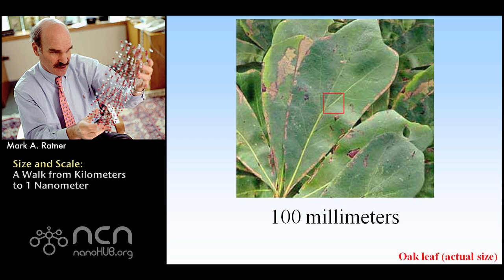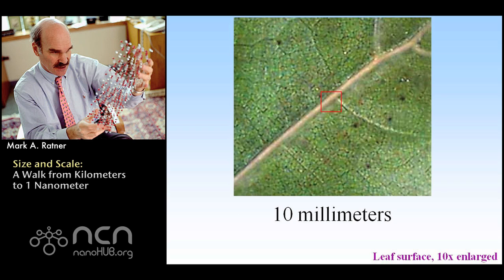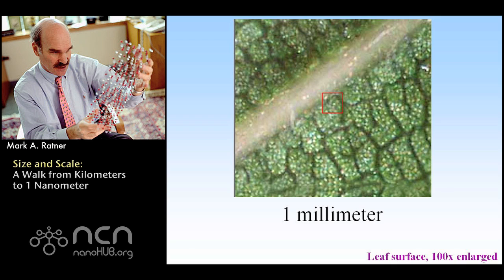This is the first actual-size picture. We started with a very large view of southern Florida and have brought it down so that it's actual size. All these have been reduced; now we're going to start expanding and making them bigger. Go down to 10 millimeters — the surface of the leaf with the central spine coming out and the branches coming off of that. This is enlarged ten times. Go down to one millimeter — a tenth of a centimeter, about a twenty-fifth of an inch — and you can see the surface of the leaf.